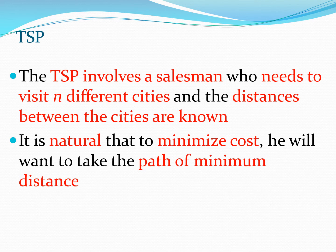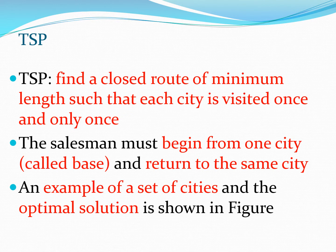The TSP involves a salesman who needs to visit n different cities. The distances between these cities are known and are typically different numbers. It is natural that the salesman would want to minimize cost and take the path of minimum distance, whether traveling by road or any other means. We can formally define TSP as the problem of finding a closed route of minimum length such that each city is visited once and only once.